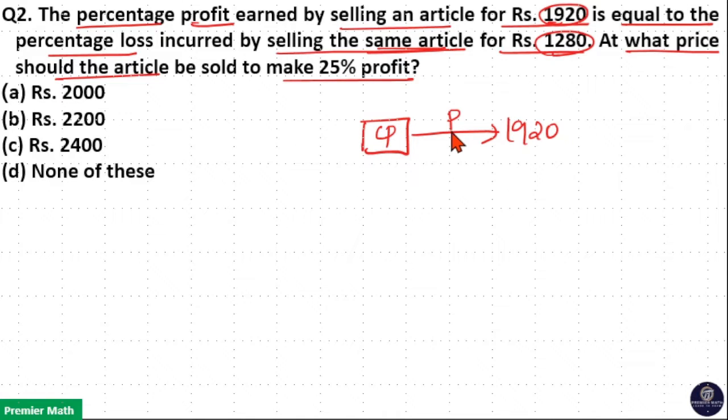Now, cost price plus profit is equal to selling price. But when selling this same article at rupees 12.80, this article incurred a loss same as this profit. That is, here profit is equal to loss.